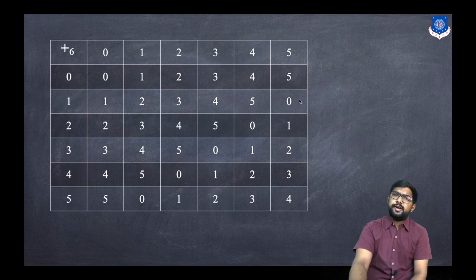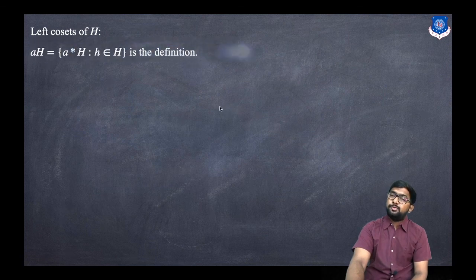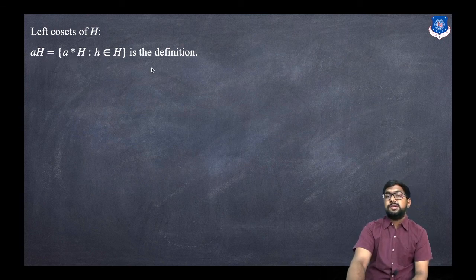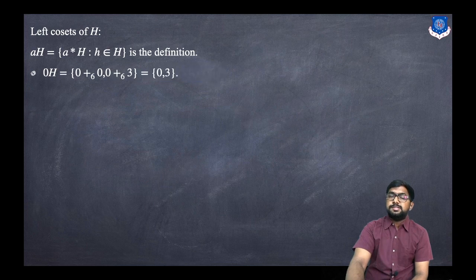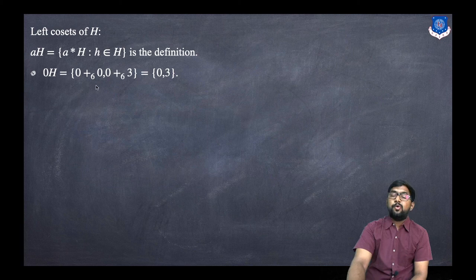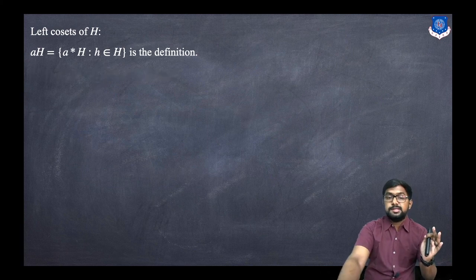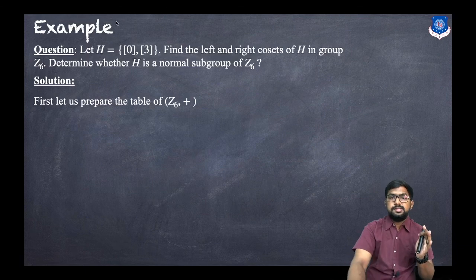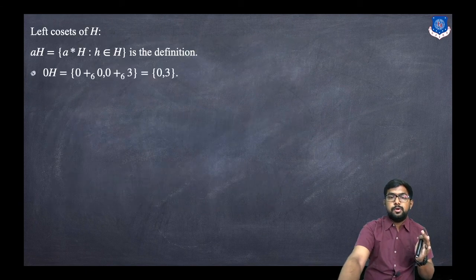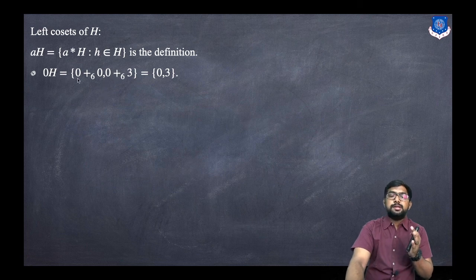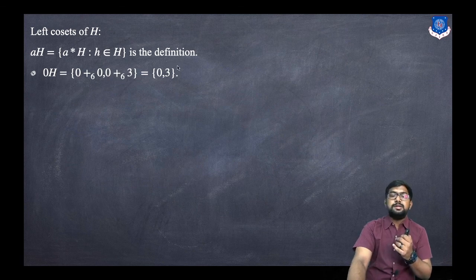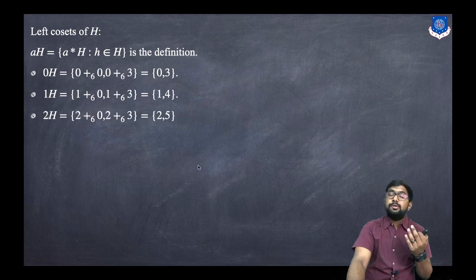Now, left cosets of H. The notation is aH = {a * h | h ∈ H}. Now, 0H: the set H is given as {0, 3}. So 0+0 divided by 6 gives remainder 0, and 0+3 divided by 6 gives 3. So 0H = {0, 3}.